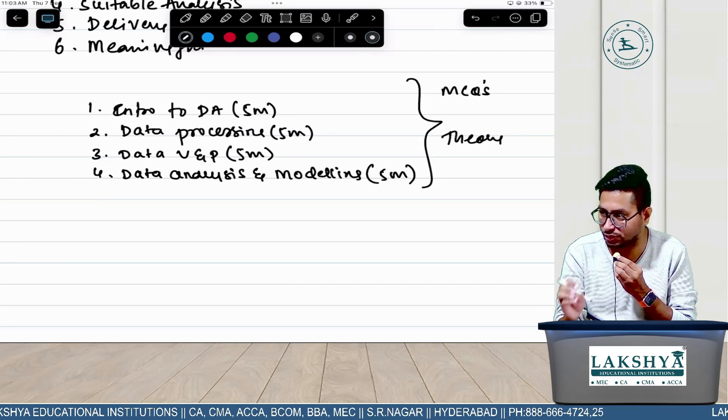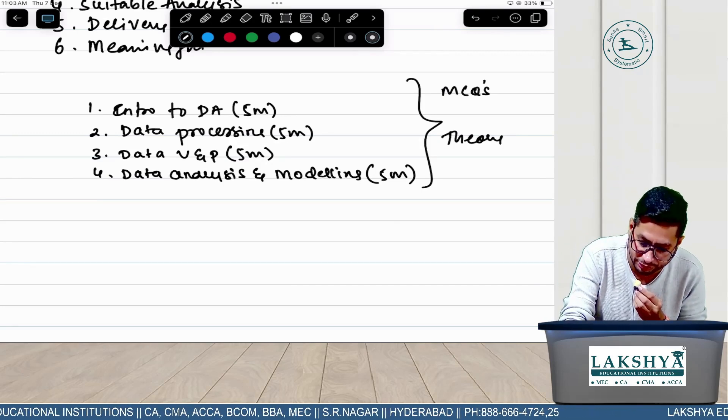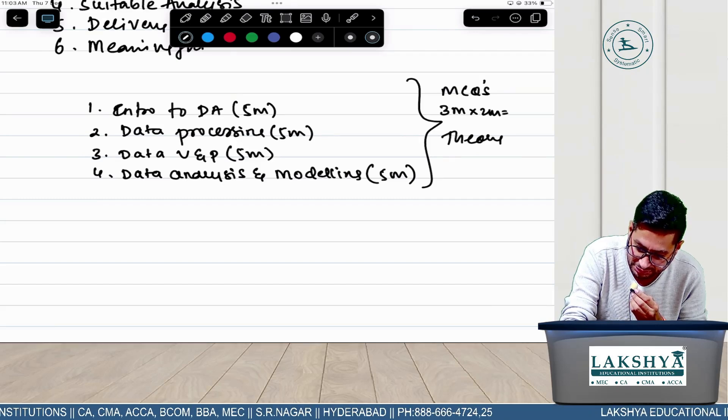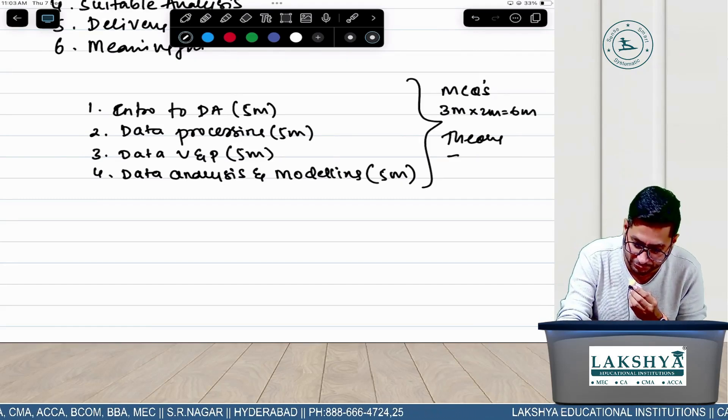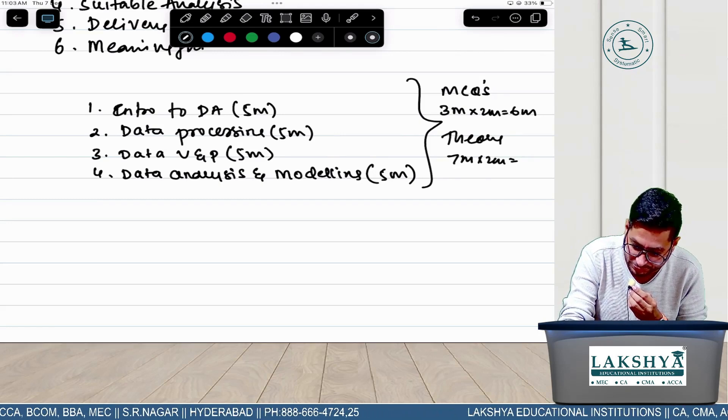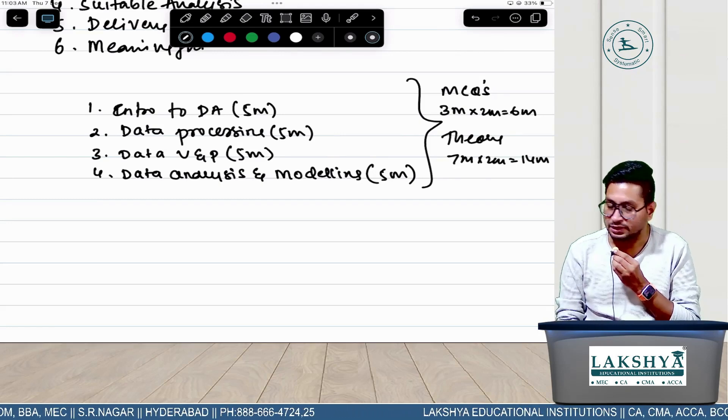There is no choice - in theory there is no choice. You have to attempt whatever questions they give. In MCQs we have 3 MCQs of 2 marks each, that's 6 marks, and theory has 2 questions of 7 marks each, which is 14 marks.